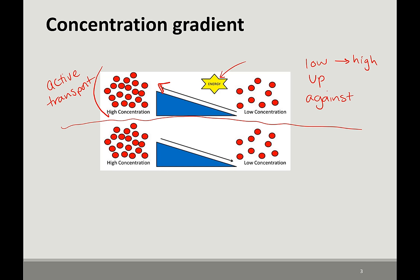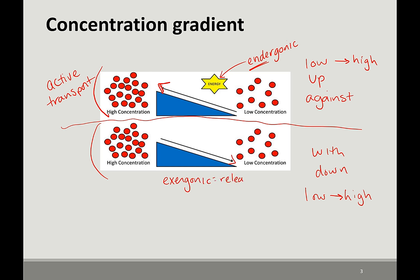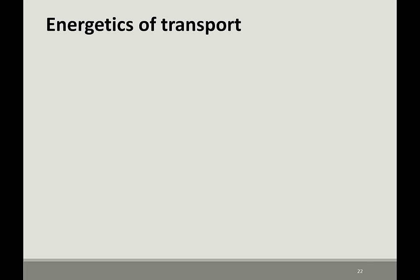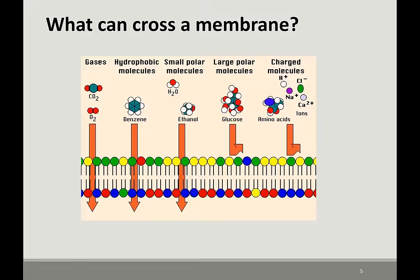When you're going with or down the concentration gradient, that's easy, like rolling downhill — you're going from high to low. While going against the gradient is an endergonic reaction that takes energy, going down the gradient can be exergonic, which means it releases energy, or more importantly, no energy is required. This is passive transport.